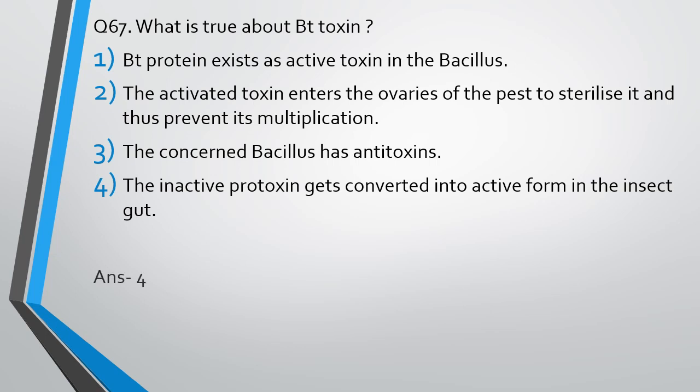The correct answer is statement 4. Statement 1 says the toxin is secreted in active form — incorrect, it is secreted in inactive form. Statement 2 says the activated toxin enters the ovaries — incorrect; its action site is the intestines, not the ovaries. Statement 3 says Bacillus has antitoxins — incorrect, it does not contain antitoxins. It is protected because the toxin is secreted as an inactive protoxin, activated only in the insect gut due to the alkaline pH there. So the correct answer is statement 4.